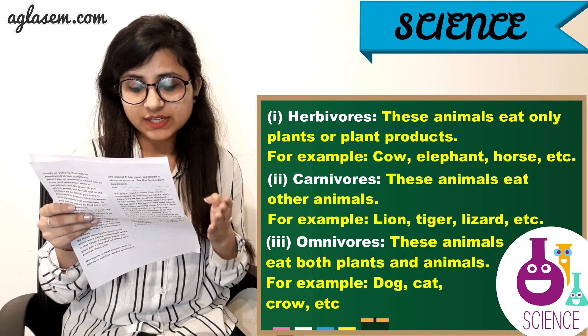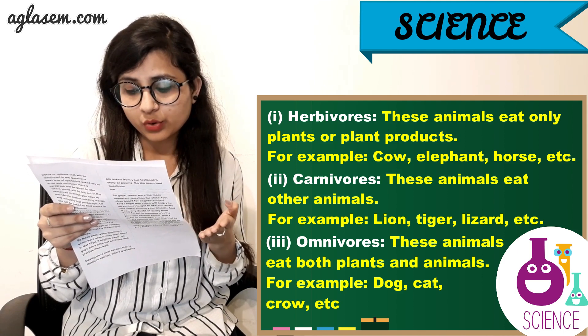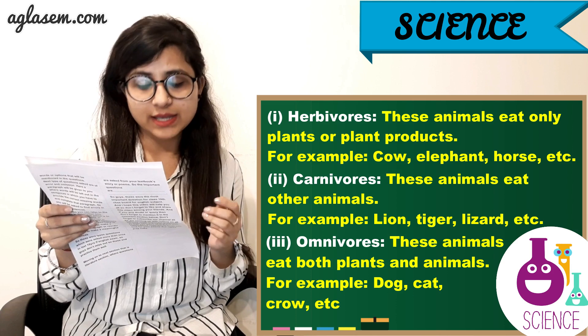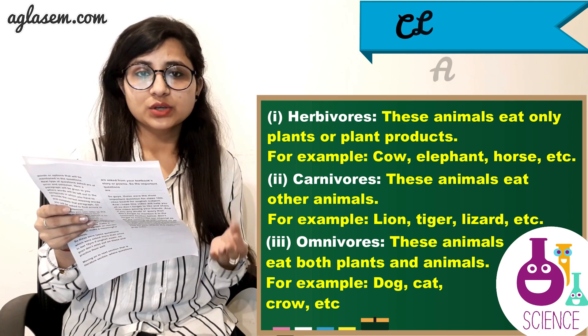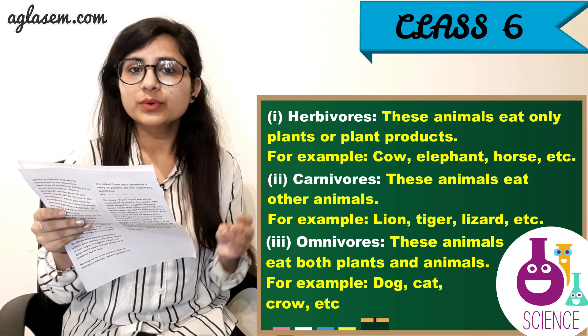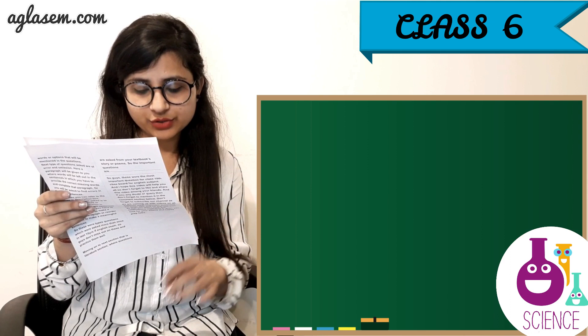3. Omnivorous — these animals eat both plants and animals. For example, dog, cat, crow, etc.